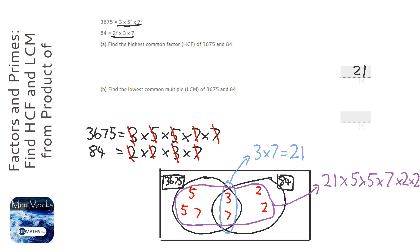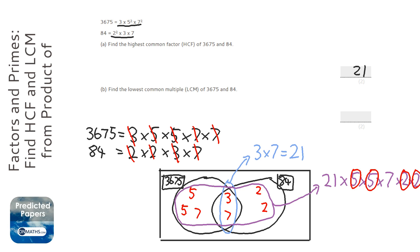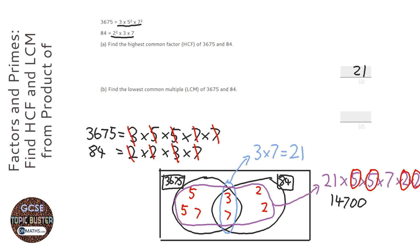On the non-calculator paper, it might be a bit more generous with the numbers. This one is probably going to be more on the calculator paper, although there are ways you can do this. For instance, I could pair the 5s and the 2s up, and that would make 10. The 5 and the 2 would make another 10, so we've got 100. So all we need to do is 21 times 7 and then put two 0s at the end of it. 21 times 7 is 147, so the answer is 14,700. The chances of finding that with trial and error are close to impossible, so you can see why this method is so good.